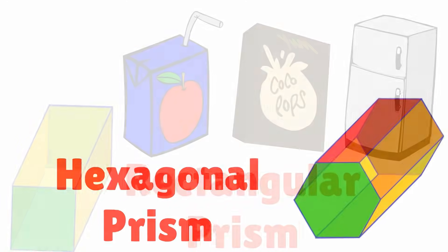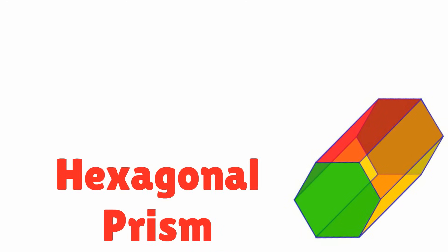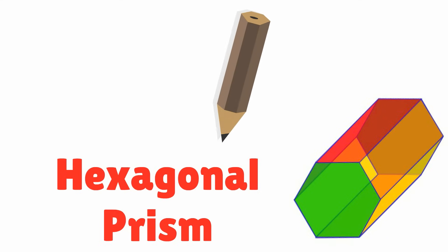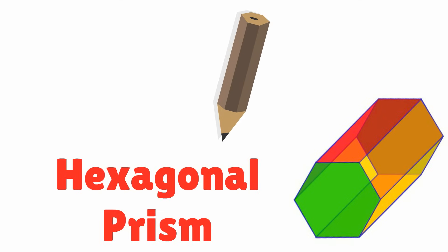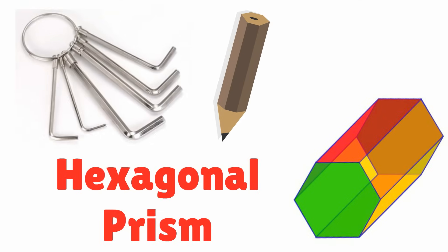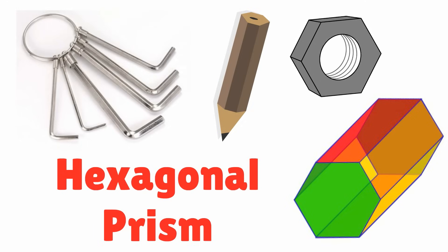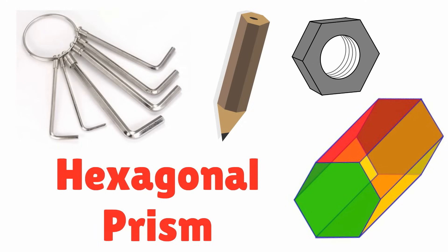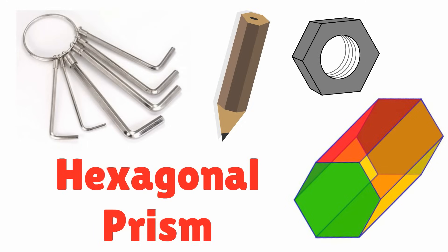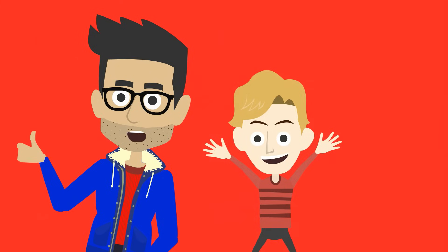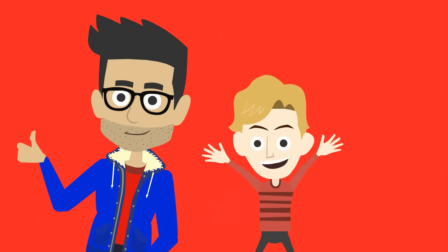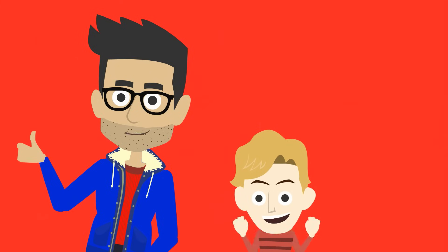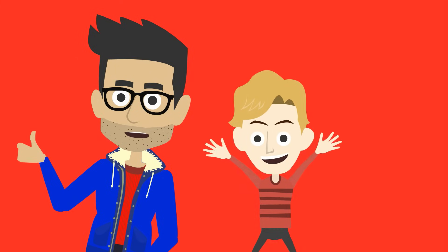Some common items that look like a hexagonal prism are a pencil, an allen wrench, and a nut. You did a great job today. Keep on practicing your shapes.